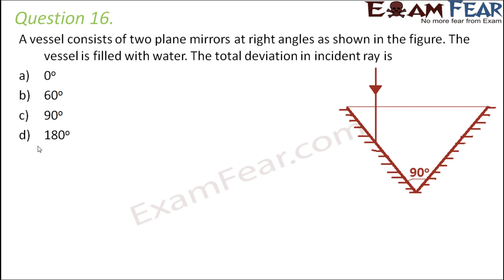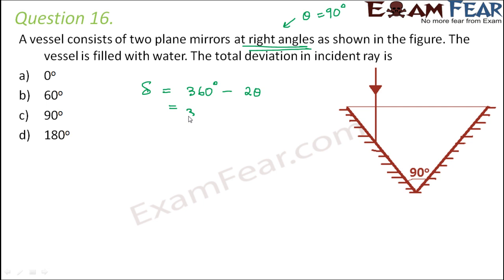Question number 16: a vessel consists of two plane mirrors at right angles. The vessel is filled with water. We need to find the total deviation in the incident ray. The deviation produced by two plane mirrors is δ = 360° − 2θ, where θ is the angle between the mirrors. Here θ = 90°, so δ = 360° − 2 × 90° = 360° − 180° = 180°.